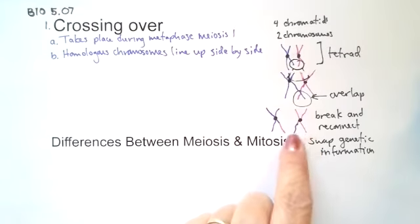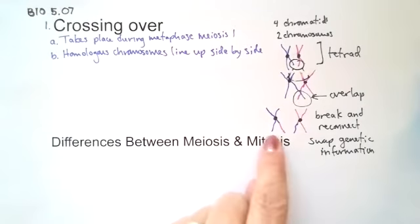And then they break off and reconnect. And you end up with this homologous chromosome has a piece of this, and this homologous chromosome has a piece of that.